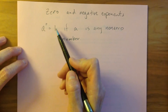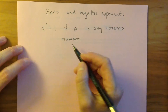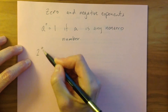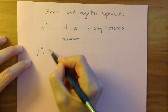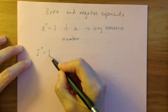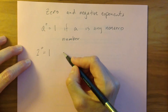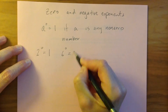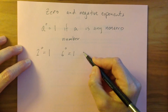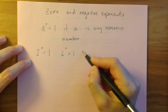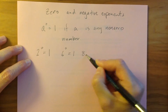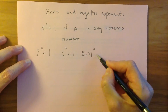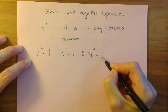At the end of the video, I'll talk about why this is true. For example, if I have two to the power of zero, I'm going to get one. If I have six to the power of zero, that will equal one. If I have 8.71 to the power of zero, that will also equal one.